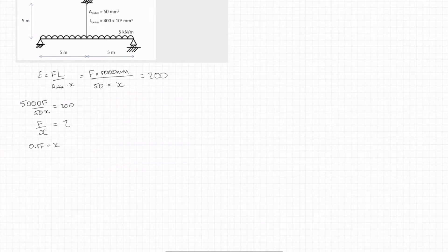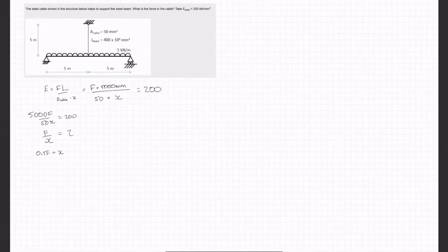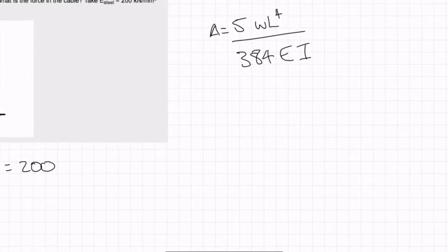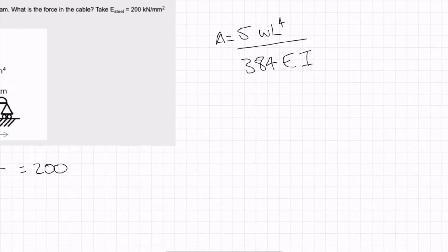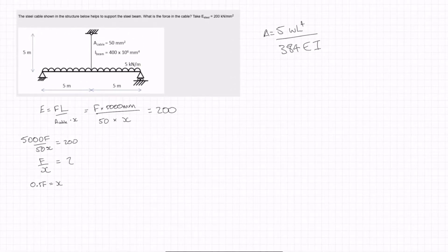Now maximum deflection of the beam if the cable weren't there we have this very important formula. 5 over 384 times WL to the 4 over EI is equal to delta. Now we need this in kilonewtons and millimetres as well. So 5 times 0.005 kilonewtons per millimetre which is that W there.